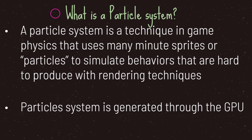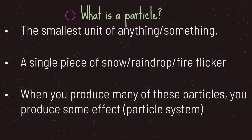A particle system is a technique in game physics that uses many minute sprites or particles to simulate behaviors that are hard to produce with rendering techniques. One thing to keep in mind is that a particle system is generated through the graphics processing unit, or GPU for short. A particle is the smallest unit of anything — you can think of a particle as a single piece of snow, a raindrop, or even a fire flicker. When you produce many of these particles, you produce some effect, and that effect is essentially known as a particle system.